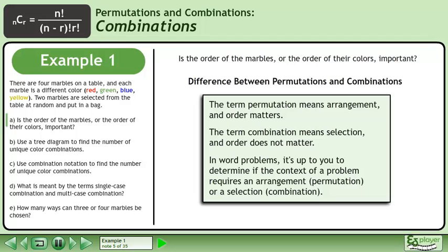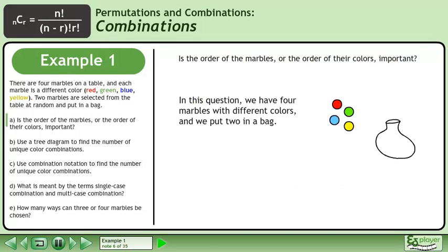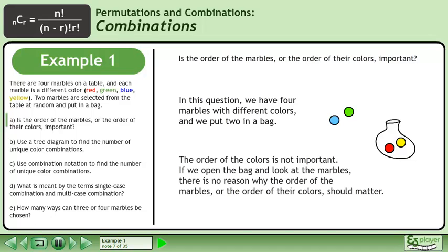In word problems, it's up to you to determine if the context of a problem requires an arrangement (a permutation) or a selection (a combination). In this question, we have four marbles with different colors and we put two in a bag. The order of the colors is not important. If we open the bag and look at the marbles, there is no reason why the order of the marbles or the order of their colors should matter.